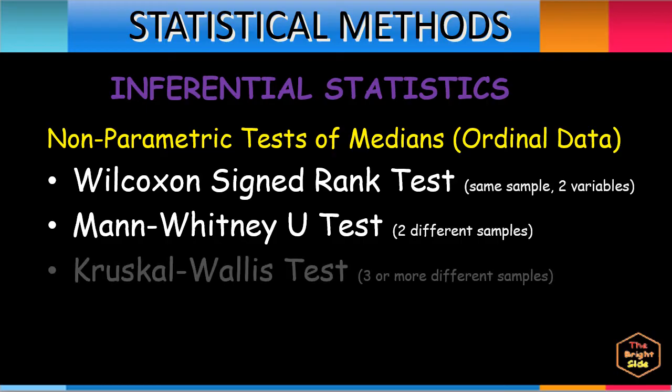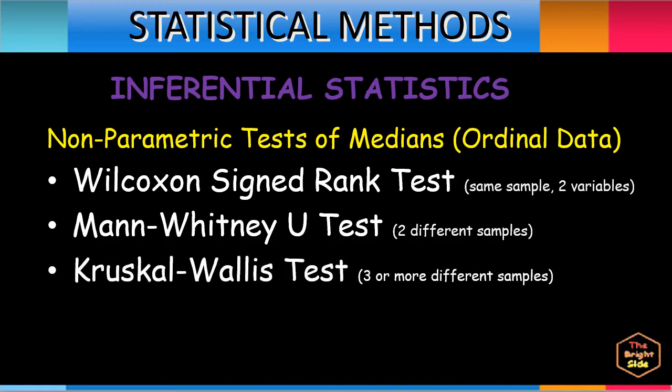The Kruskal-Wallis test is a non-parametric test used to compare more than two groups from independent samples. This test concludes whether the median of three or more groups is varied, and it will show the difference between more than two ordinal data groups.